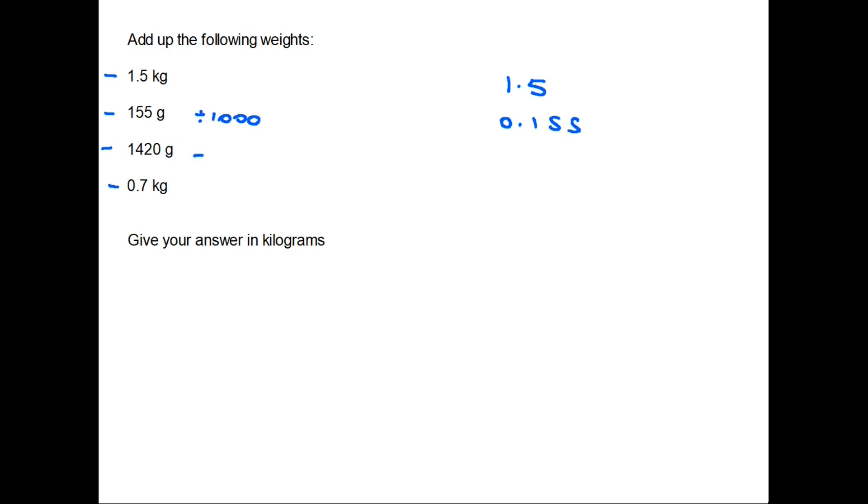Again, 1420 we are going to have to convert to kilograms. Divide by a thousand and we get 1.42. 0.7 kilograms - that is already in kilograms. Therefore, we now have all four amounts in kilograms, and if we add it up, we find our answer is 3.775. And as requested, we've given our answer in kilograms.